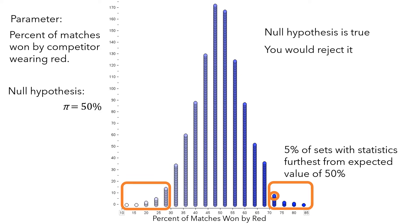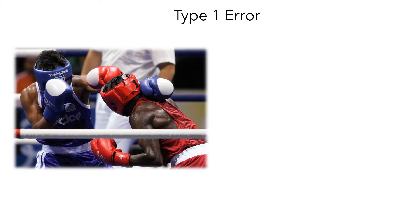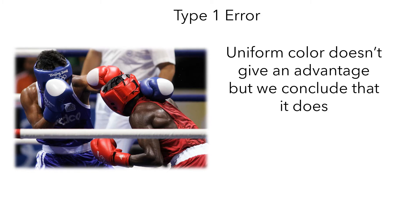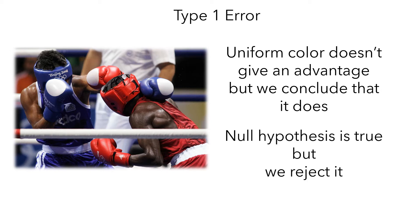And that would be bad. This would constitute what's known as a type 1 error. In this scenario, it's when uniform color doesn't give an advantage, but we conclude that it does, just because sampling variation happened to give us a set with a really high or low percentage of wins for red. In more formal terms, a type 1 error is when the null hypothesis is true, but we reject it.